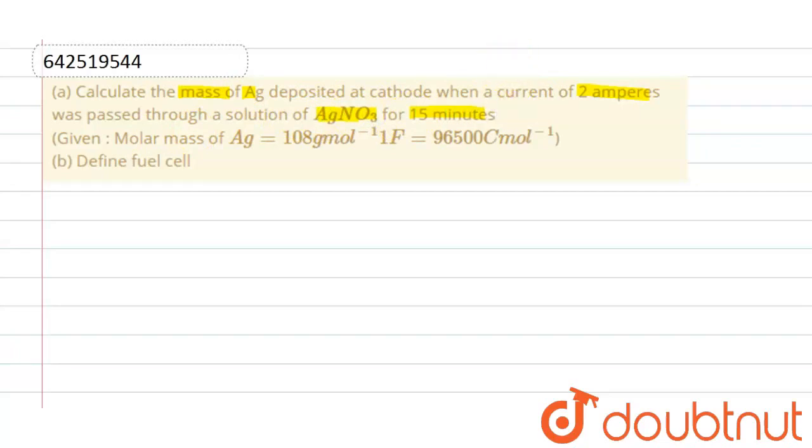Here is the solution. According to Faraday's first law, weight equals ZIT where W is mass deposited at cathode, Z is electrochemical constant, I is current, and T is time.